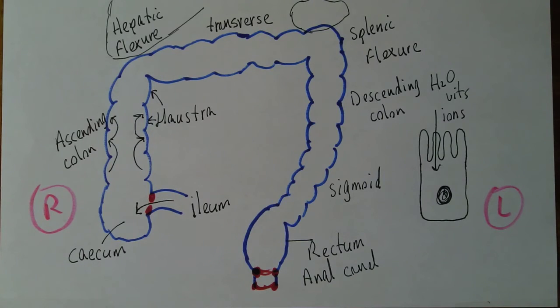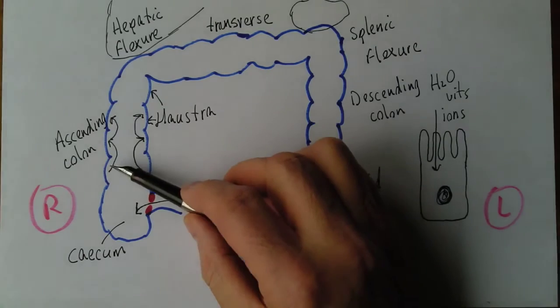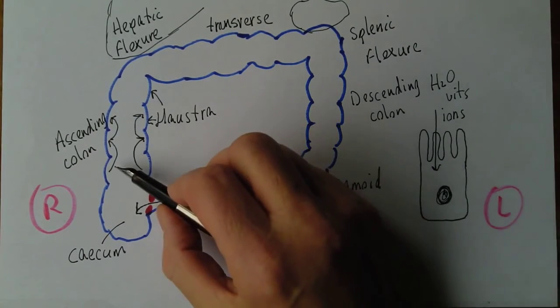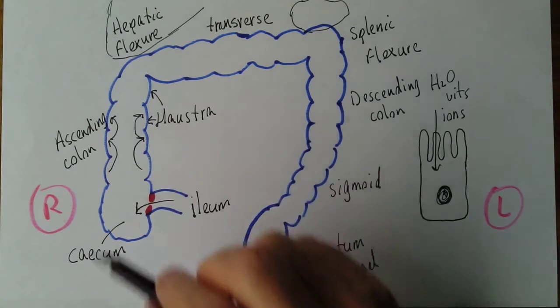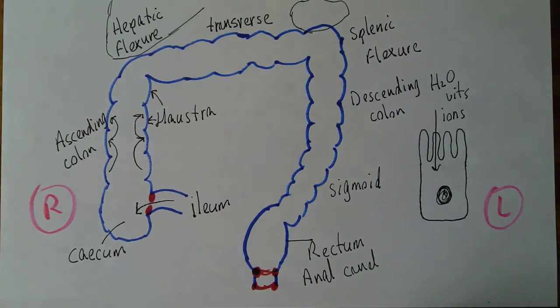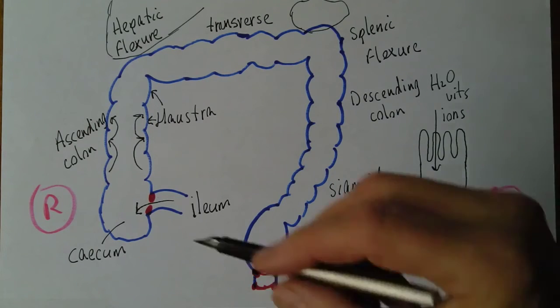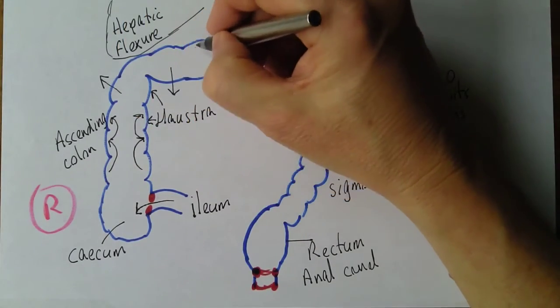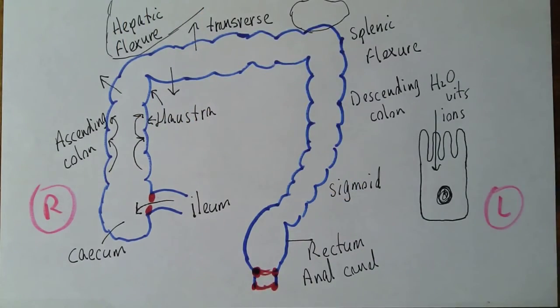So we've got the mucosa lining the colon, then we've got a submucosa, so it's mucosa, submucosa, muscular layer, and then the outer layer, the serosa. So materials being absorbed all the time, ions, water, vitamins being absorbed.